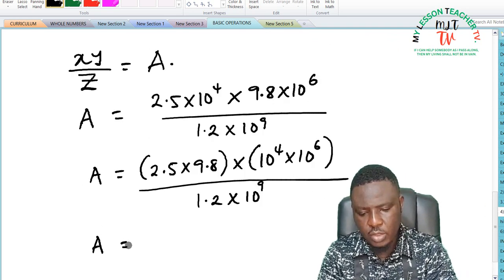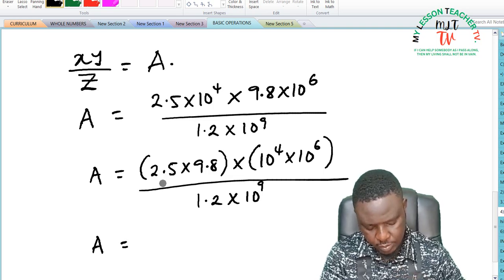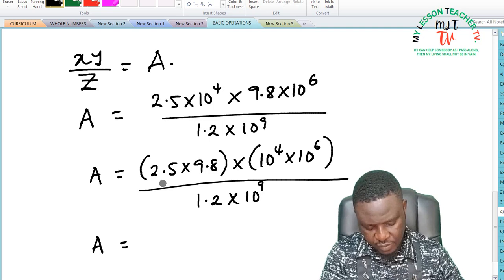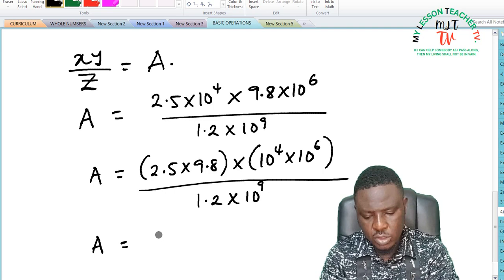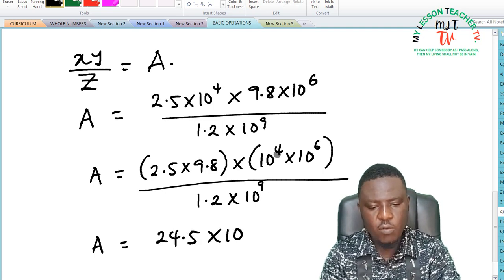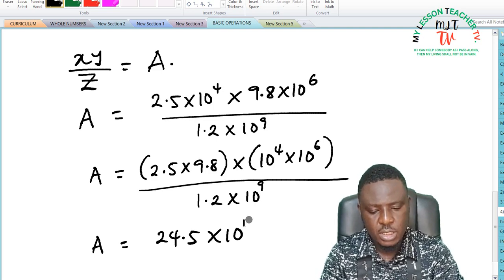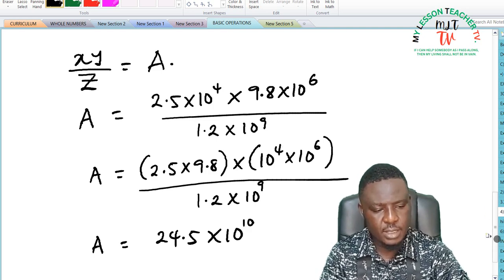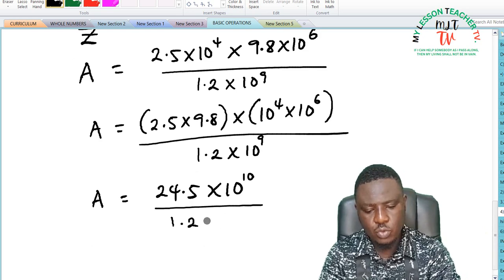You have your value for A to be equal to, what is 2.5 times 9.8? 2.5 times 9.8 is said to be 24.5. So this is 24.5 times 10 raised to the power of, 10 raised to the power of 4 plus 6 is 10 raised to the power of 10, divided by 1.2 times 10 raised to the power of 9.